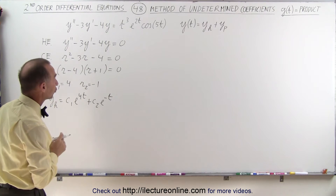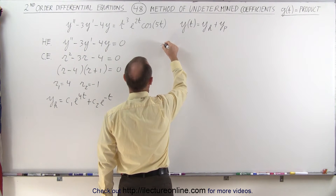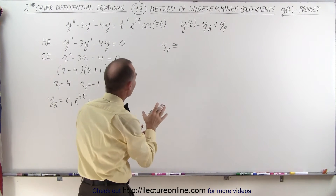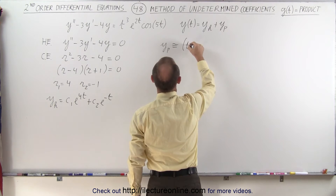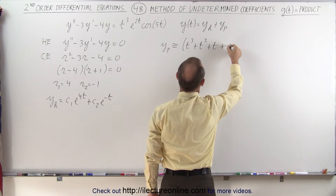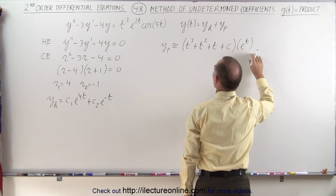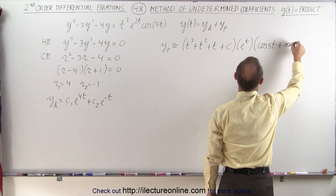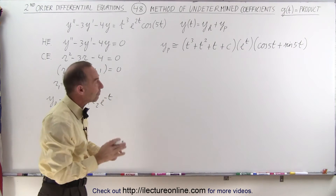So that's the homogeneous part of the solution. Now we need to find the particular solution. We know that the form of the particular solution will look as follows. So y sub p is going to be something — I don't write an equal sign here because I need to put the coefficients in later — but I do know that I'm going to need a polynomial: t cubed plus t squared plus t to the first power plus some constant. And we're going to multiply that times e to the t, and then multiply that times the cosine of 5t plus the sine of 5t.